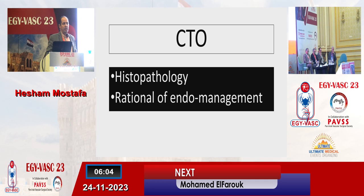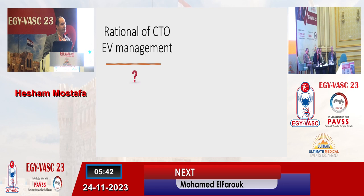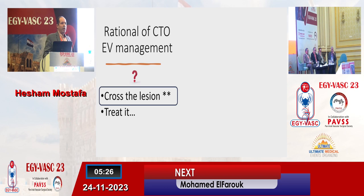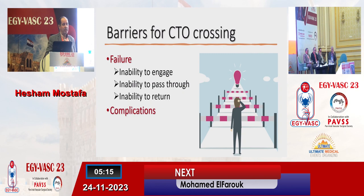For any subject we are going to study, we want to know pathology and management. The pathology of CTO is nothing but plaque and organized thrombus. The organized thrombus has a proximal cap, body, and distal cap. Regarding the rationale of management of CTO, we have two points: the first is to cross the lesion, and the second is to treat it by whatever method — either balloon angioplasty, stenting, or whatever. Regarding crossing CTO, we have barriers — either failure or complications. Failure includes: failure to engage into the lesion, to pass through the lesion, to come back to the true lumen. Complications encountered are either branch occlusion proximally or distally, or perforation.